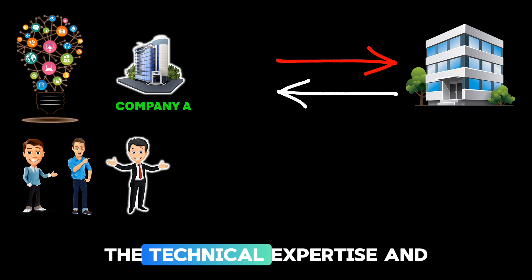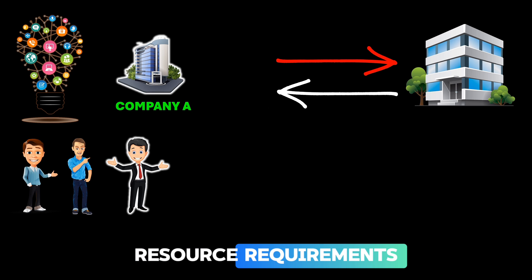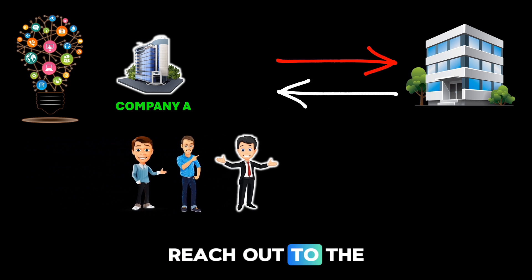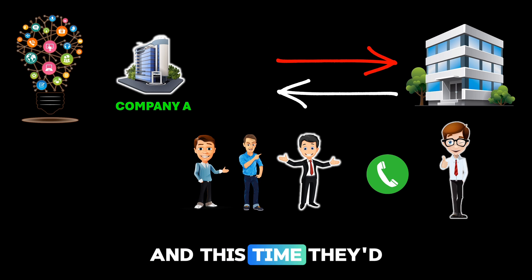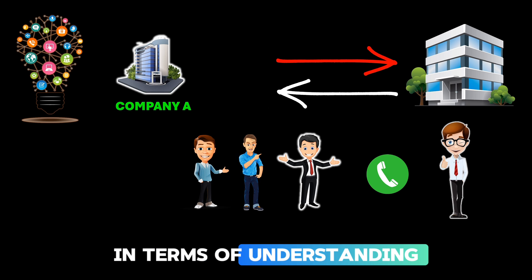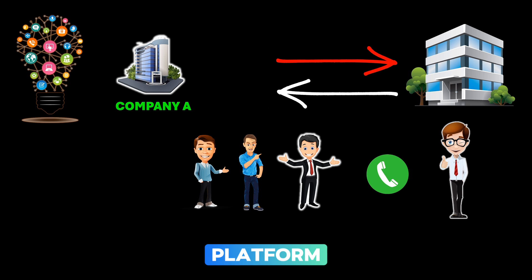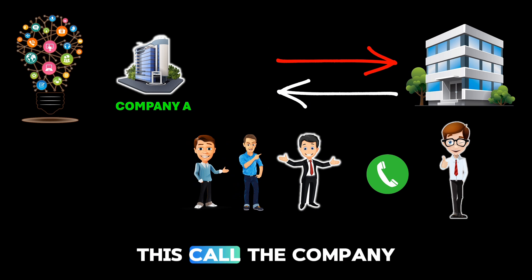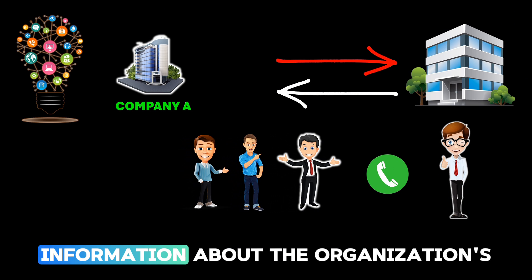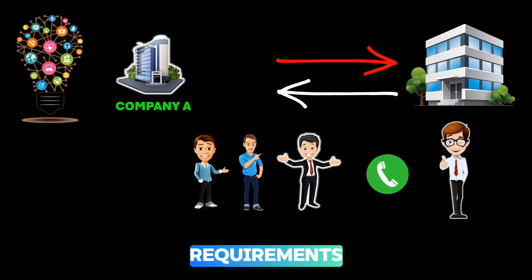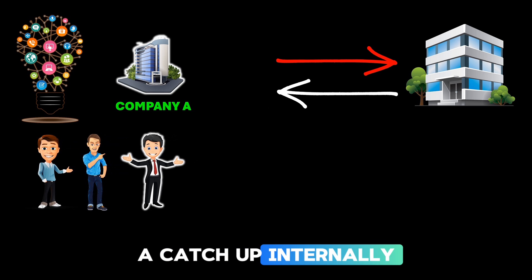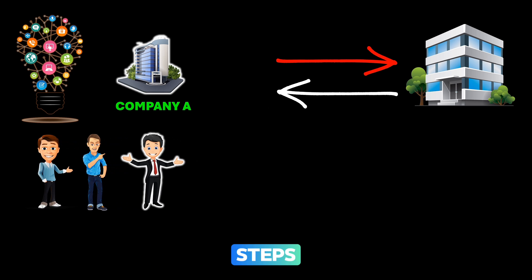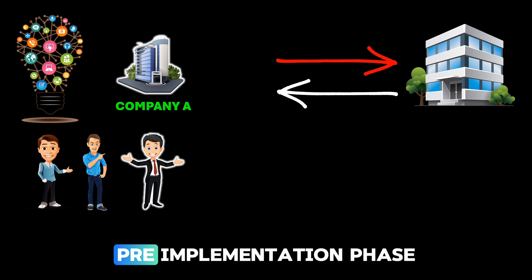If the requirements align with the technical expertise and resources, Company A would have another call with the organization, this time discussing in more detail: the organization's existing platform, the different data sources they have, their business needs, and other technical details. By the end of this call, Company A will have all the information about the organization's requirements and will have a catch-up internally to discuss the next steps. This would be the final step of the pre-implementation phase.